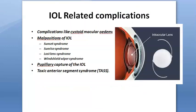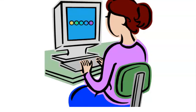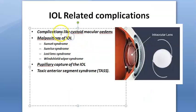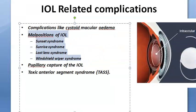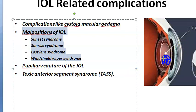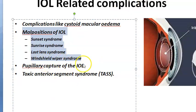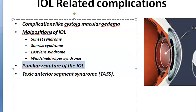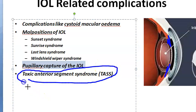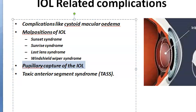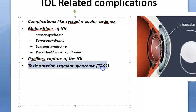IOL-related complications: cystoid macular edema can occur. Malposition of the IOL — if the IOL goes too far down it is called sunset syndrome; if it goes too far up it is called sunrise syndrome; if it goes back into the vitreous it is called lost lens syndrome; and if it moves side to side when the head moves it is called windshield wiper syndrome.